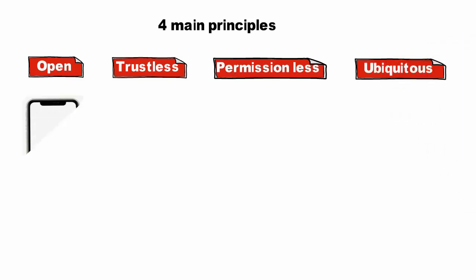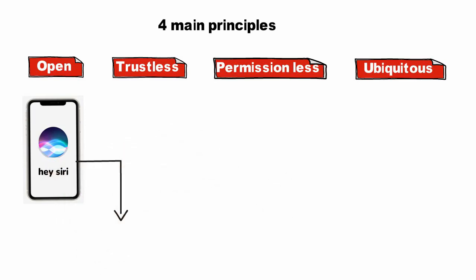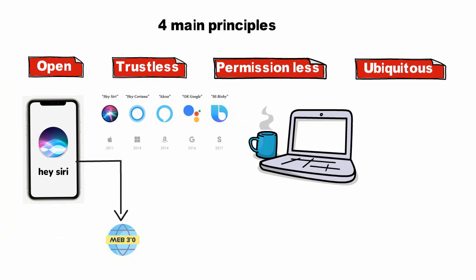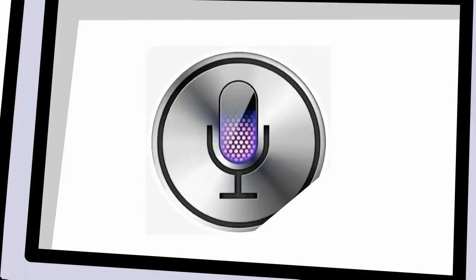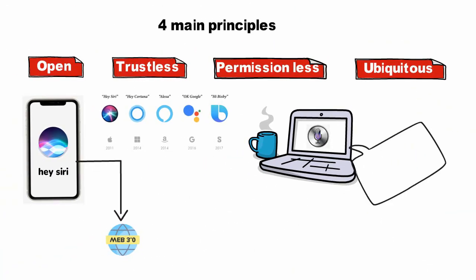Let's make this easier with an example. Apple's Siri is a perfect example of a key component of Web 3.0. Using this technology, Siri and other personal assistants communicate, share information, and provide users with more helpful search results for every meaningful query, including how-to, why, and what.